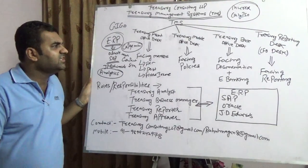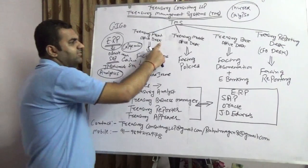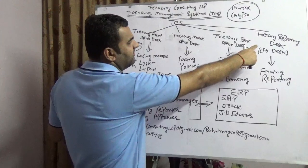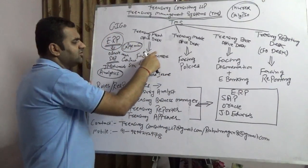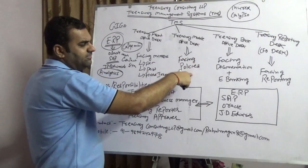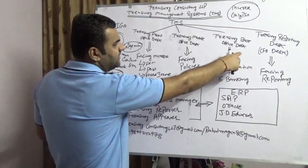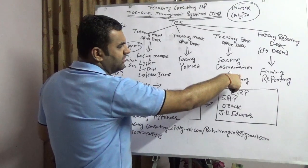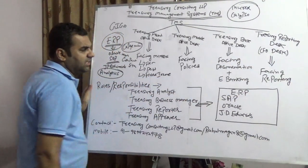Treasury management system is generally divided into four parts: treasury front office, treasury middle office, treasury back office, and treasury reporting office. Treasury front office faces the market. Treasury middle office faces the policies. Treasury back office handles documentation. And treasury reporting office takes out the reports.